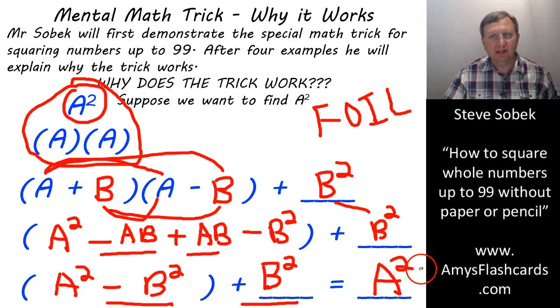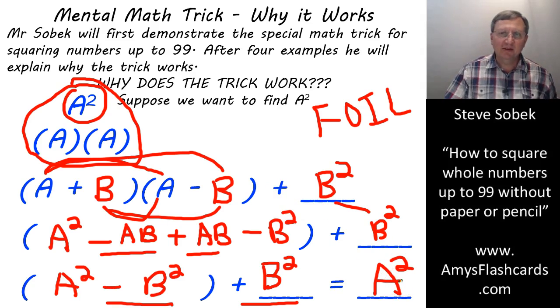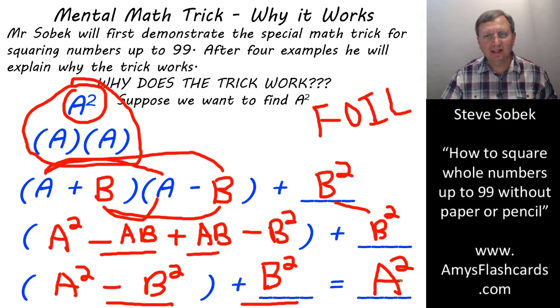So the proof is done. We've demonstrated that this memory trick, this line right here, is always going to be equivalent to the square of A. Now, whether you understood that or not, it really doesn't matter in terms of application. You can use the mental math trick without understanding why it works.